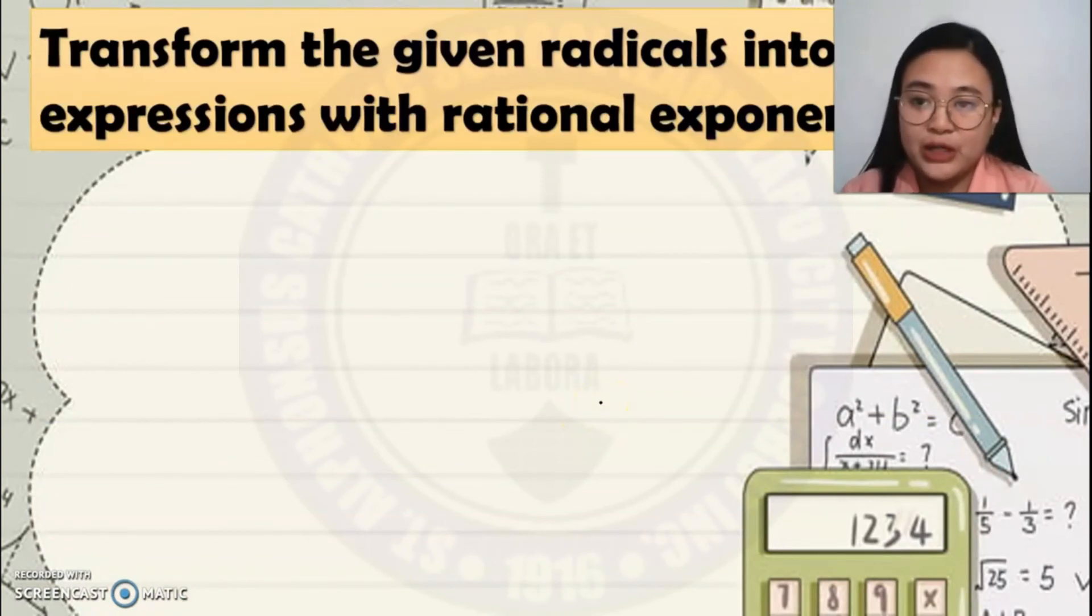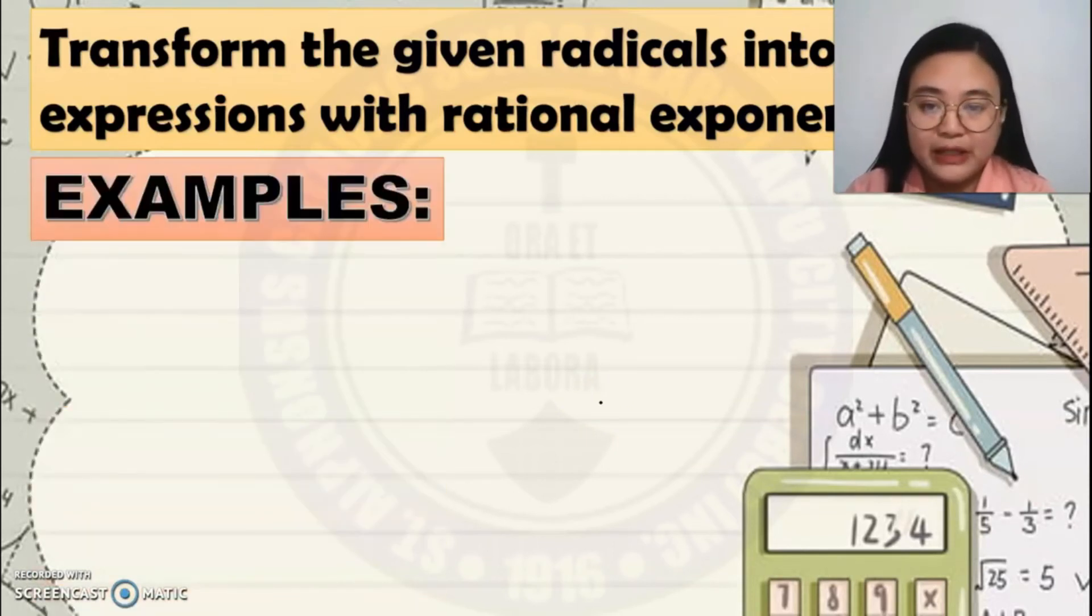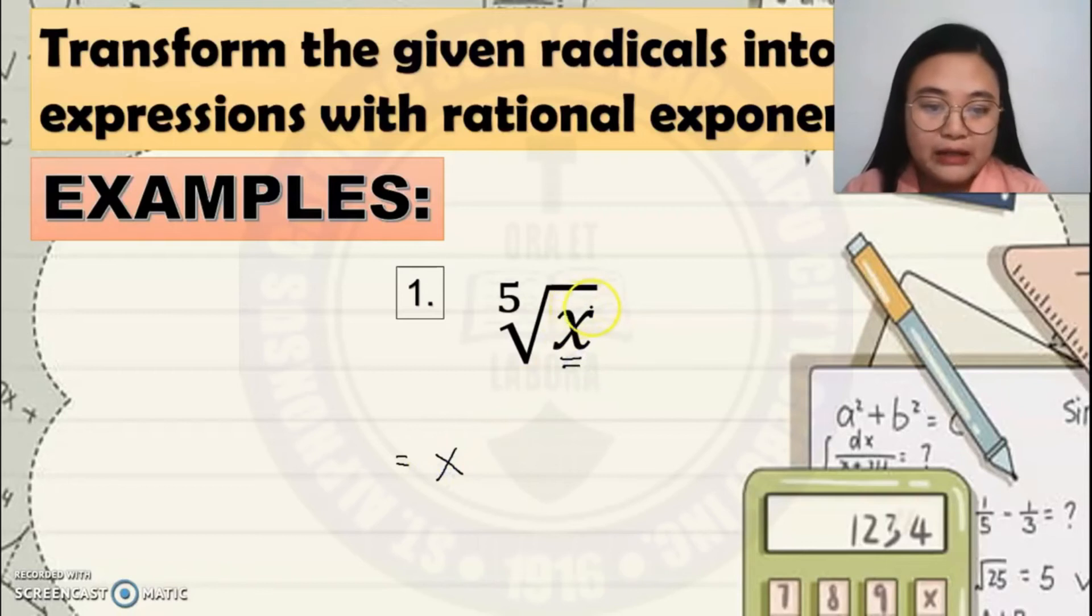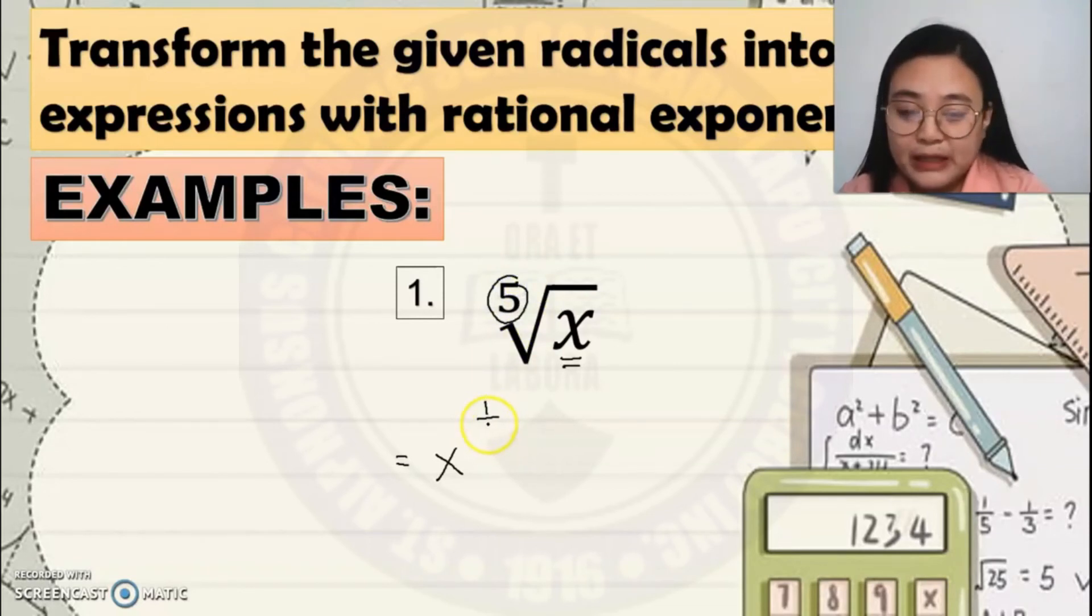Transform the given radicals into expressions with rational exponents. For example, number 1. What will happen? First, we're going to copy the radicand, which is X. Then, look if there's an exponent of it. Since you cannot see any exponent, the exponent there is automatically 1, over the index of the radical. The index is 5, so the denominator of the rational exponent is 5. That would be the final answer.